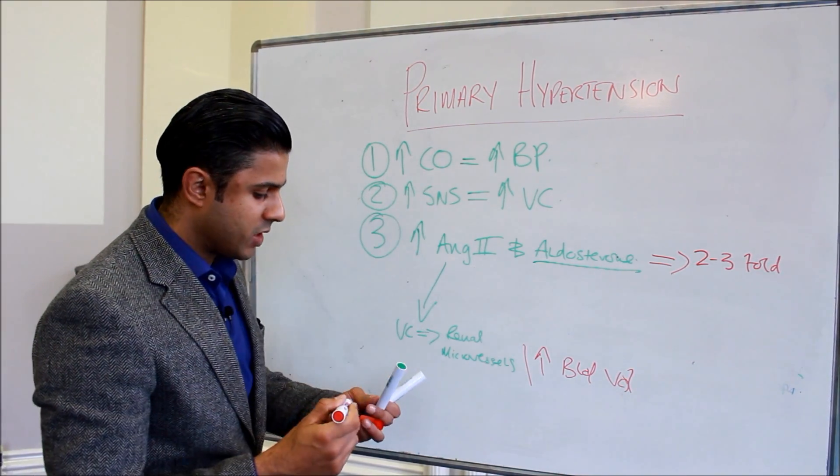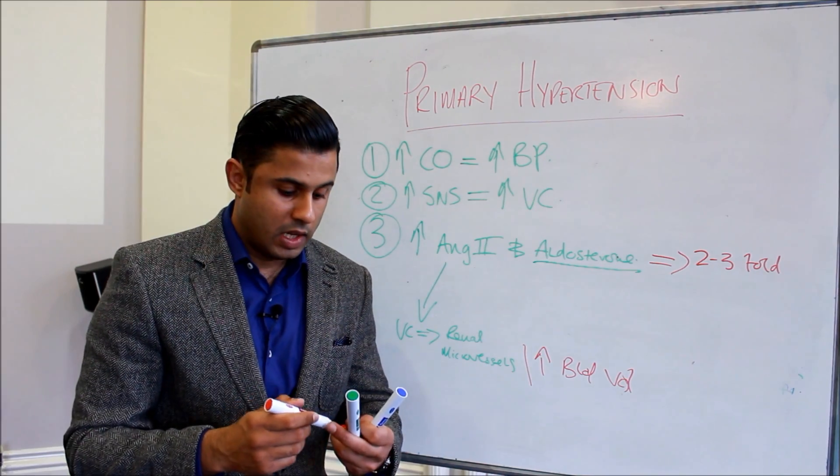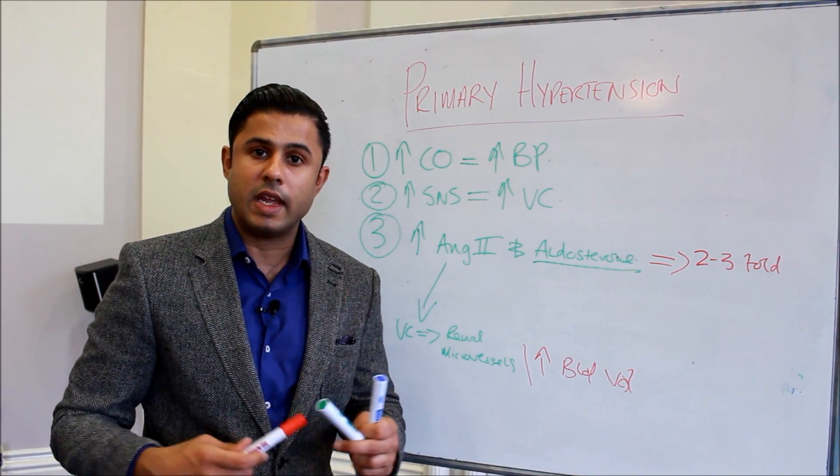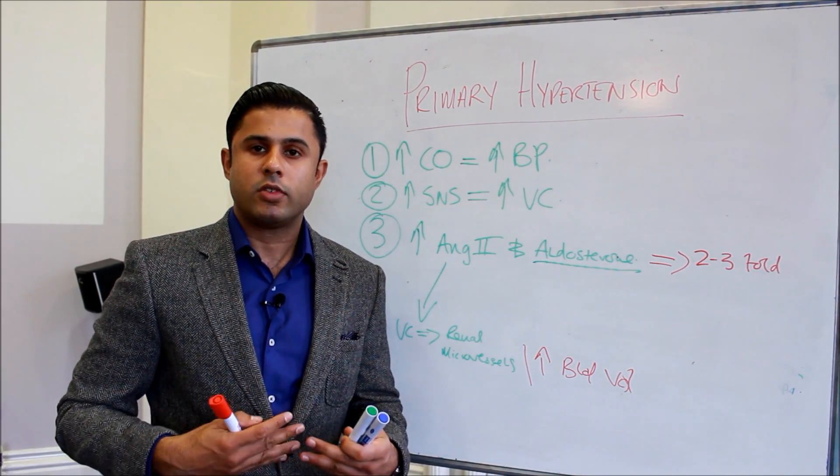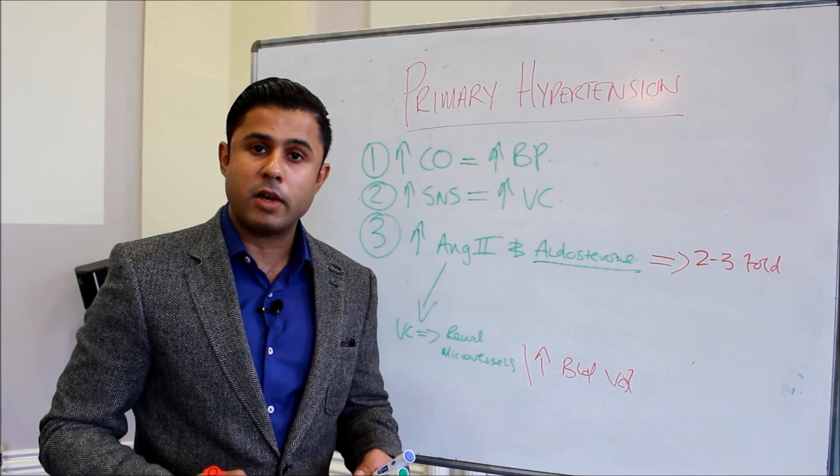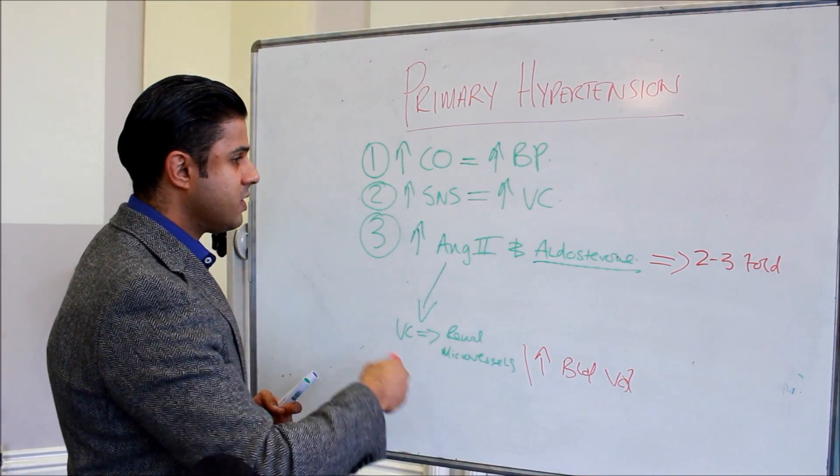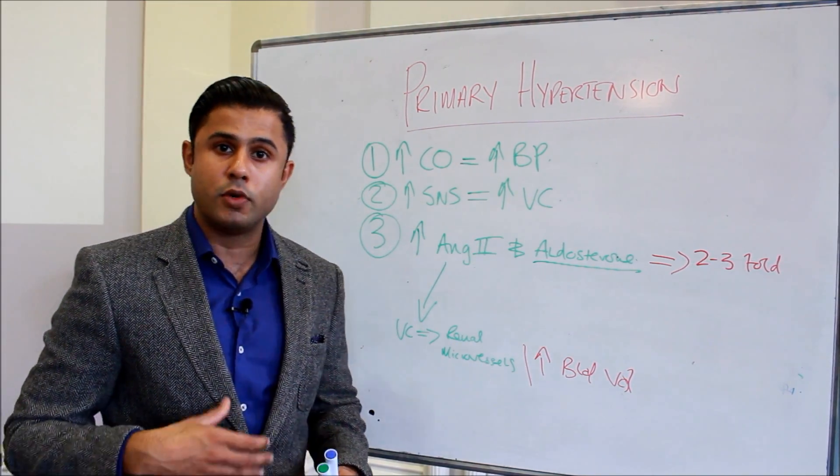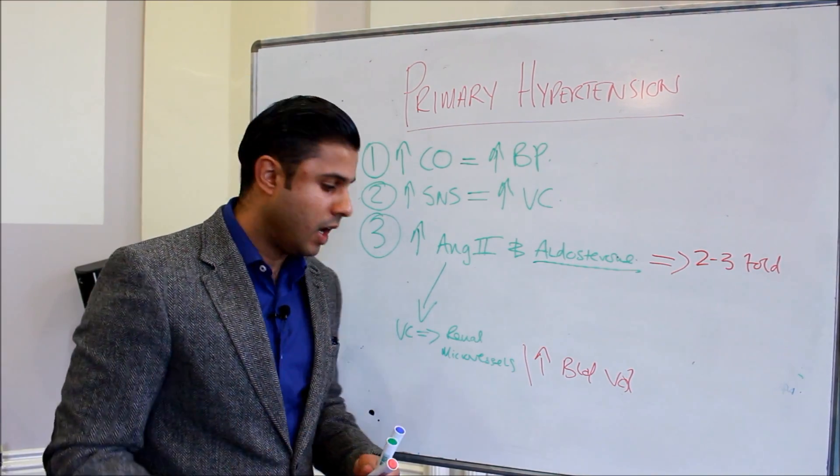These are some of the ways in which primary hypertension and obesity link together, and how somebody carrying excess amount of fat will actually have these physiological changes which will predispose them to developing hypertension.